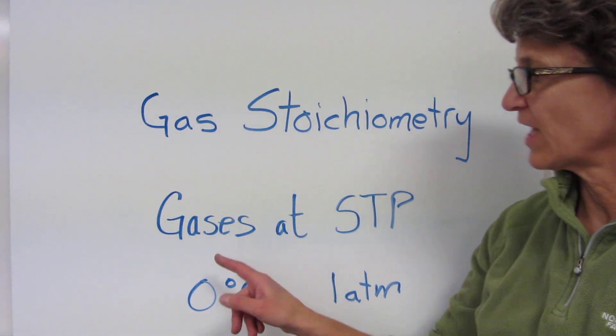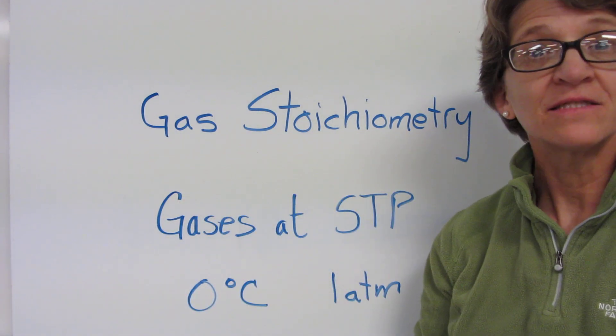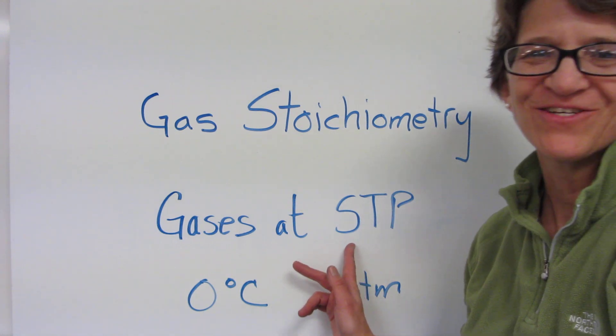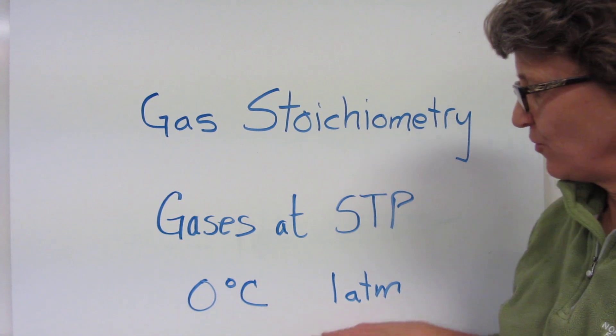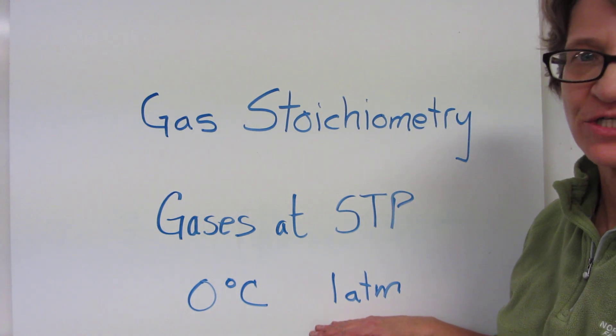Gas stoichiometry with gases at STP. STP represents standard temperature and pressure, which means zero degrees Celsius and we'll use standard pressure in one atmosphere.